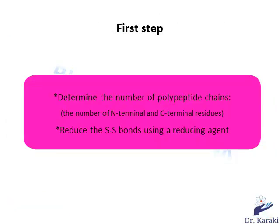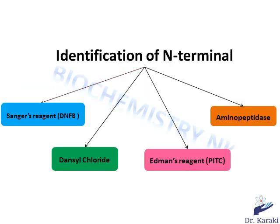Let's start by determining the number of polypeptide chains. To do so we must identify the N-terminal and C-terminal residues. To identify the N-terminal residue, we can use either a chemical or enzymatic method. From the chemical method, we can choose between Sanger's method using the Sanger's reagent dinitrofluorobenzene (DNFB), or dansyl chloride.